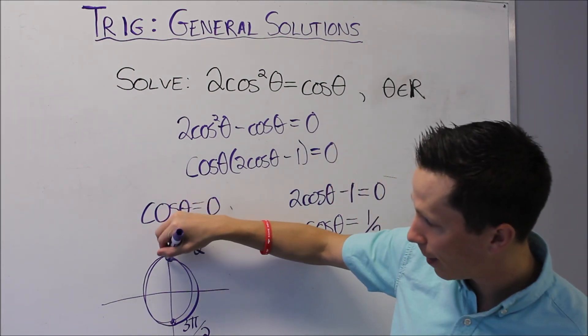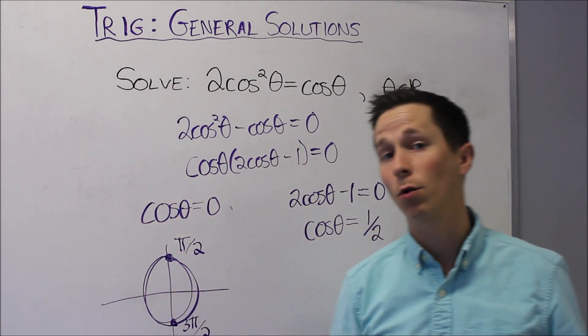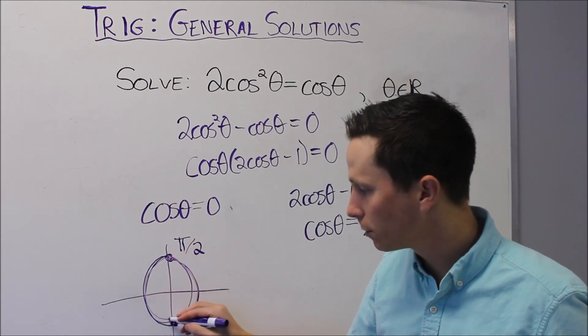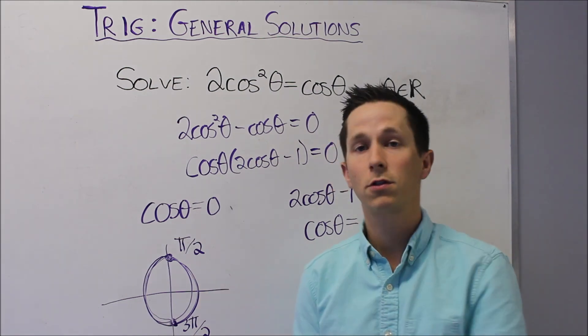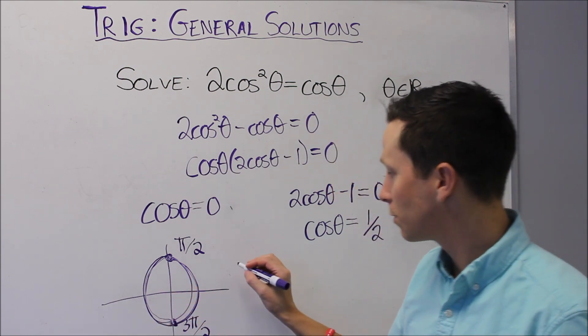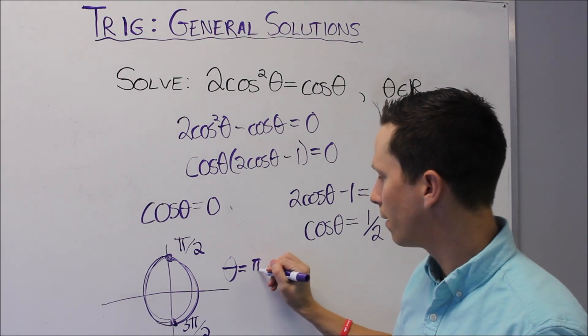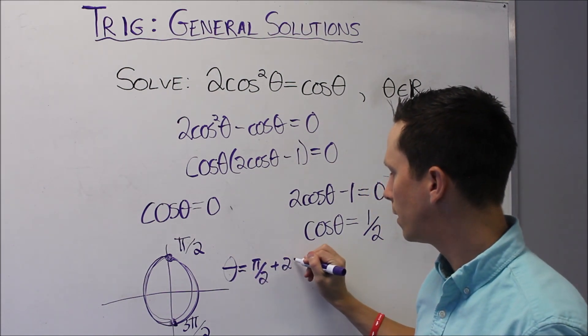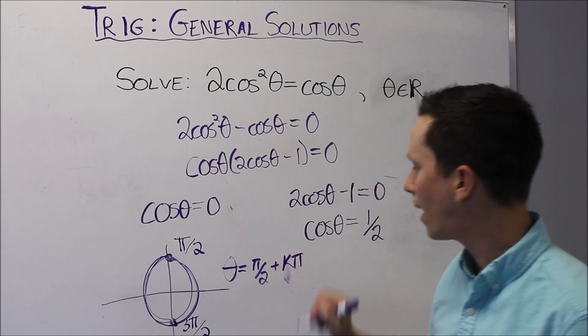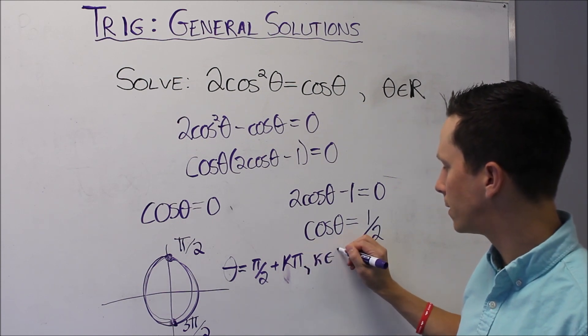We start here, at π by 2, and it only takes a rotation of π to get down here where another solution lies, and then another rotation of π, and then another rotation of π. And you'll keep hitting those two spots if you just add or subtract a certain multiple of π. So I'm going to say here that theta equals π over 2 plus k π.